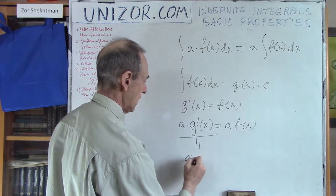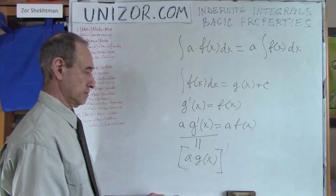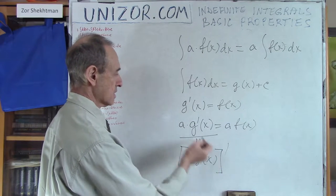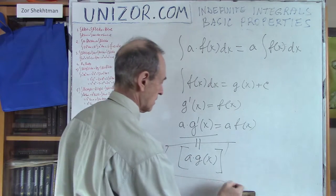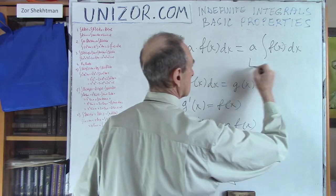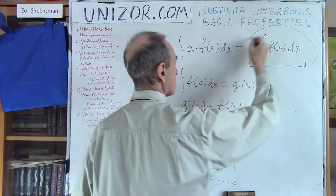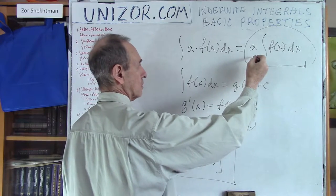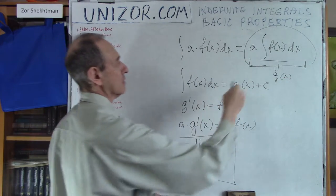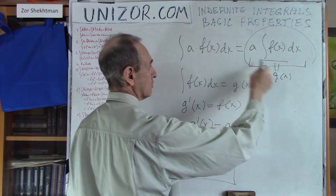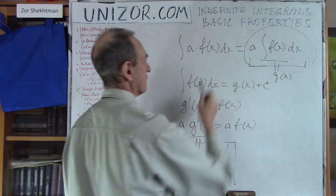We know that the derivative of the product of a function by a constant equals the constant multiplied by the derivative of the function. So this is the same as the derivative of a·g(x). Derivative of a constant times a function equals constant multiplied by derivative of the function, which proves that the integral of a·f(x)dx equals a times the integral of f(x)dx.